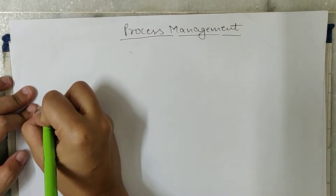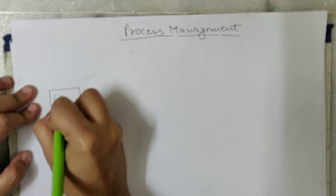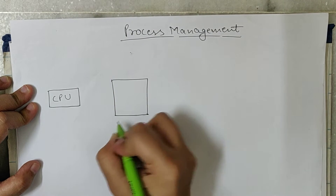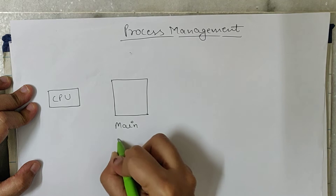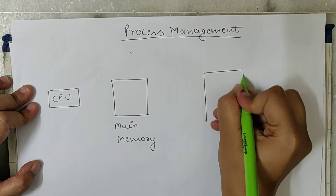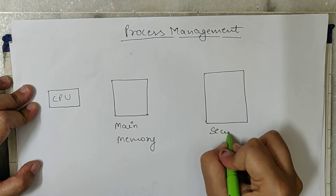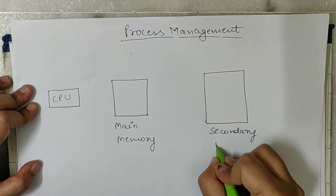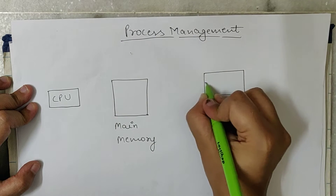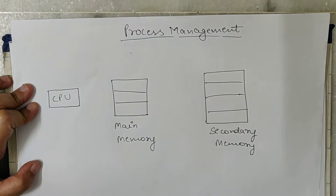So, here is a CPU, here is the main memory, and here is the secondary memory.